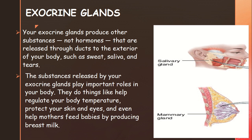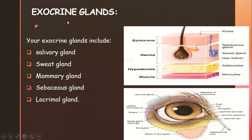For breast milk to feed babies, the mammary gland is responsible. So these are some introductory examples of exocrine glands. The exocrine glands include: salivary glands, sweat glands, mammary glands, sebaceous glands, and lacrimal glands. The first type we look at is the salivary glands, followed by the sweat glands.